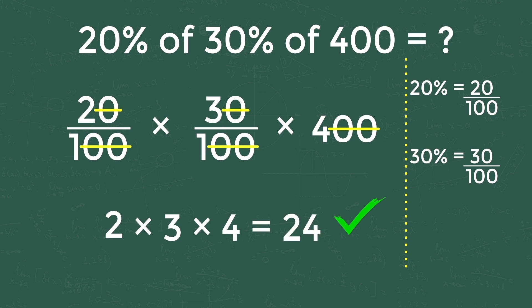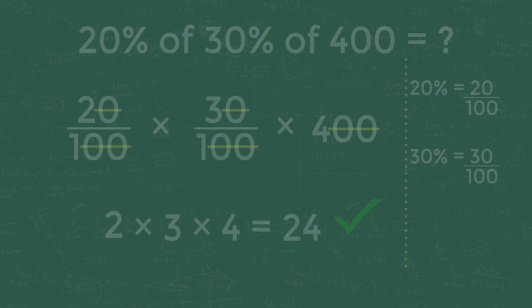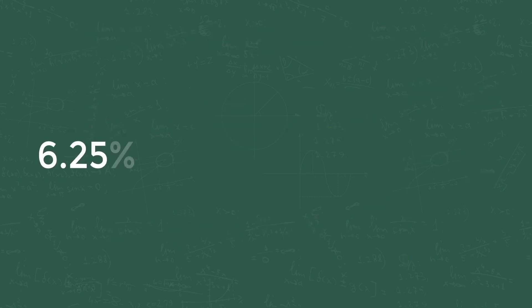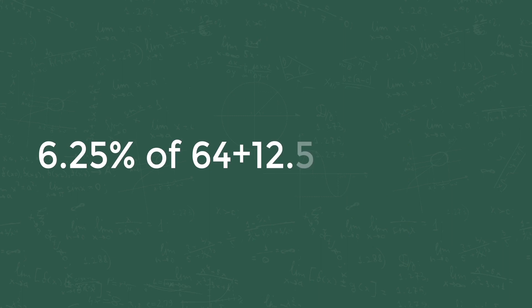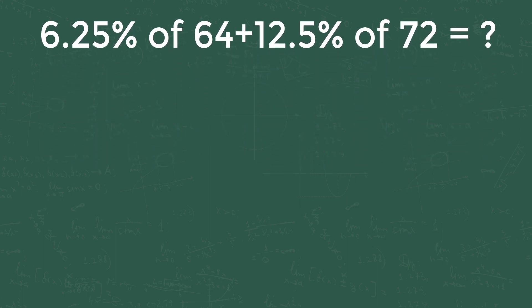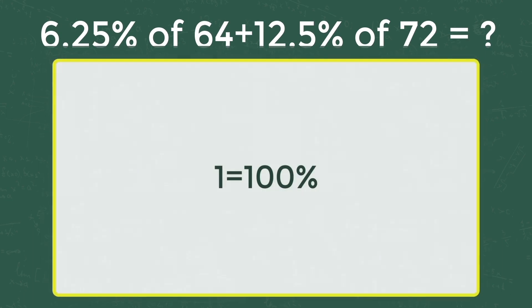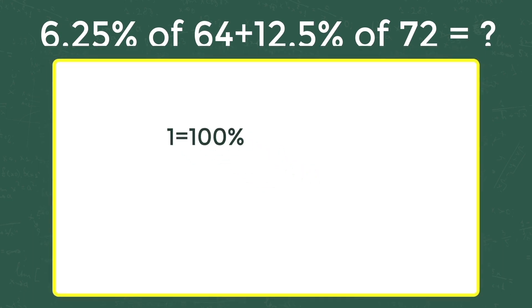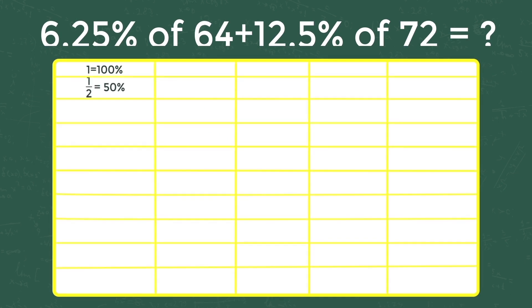Let's see the third problem: 6.25 percentage of 64 plus 12.5 percentage of 72. This problem can be solved in 2 seconds if you know the below table. That is: 1 is equal to 100 percent.